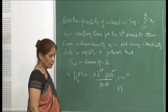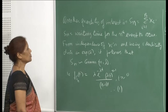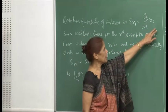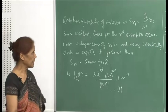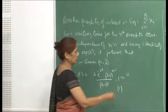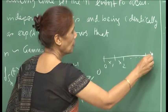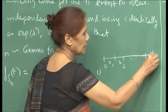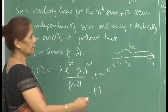Another quantity of interest is S_n = Σ xi for i = 1 to n, which is the waiting time for the nth event to occur. We are adding x1 through xn: x1 is the first inter-arrival time, x2 the second, and so on. At the point where xn ends, the nth event has occurred, so S_n is the total waiting time for the nth event.